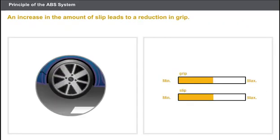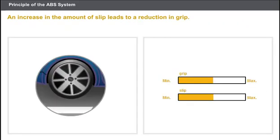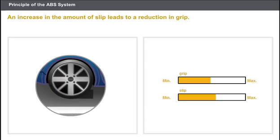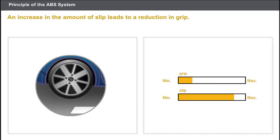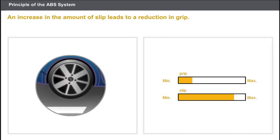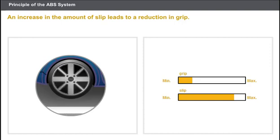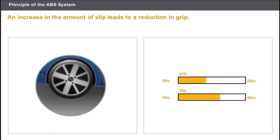Grip allows the transmission of forces between the tyre and the road surface. Slip, in contrast to grip, does not allow the transmission of forces. An increase in the amount of slip leads to a reduction in grip. Slip and grip are totally linked.